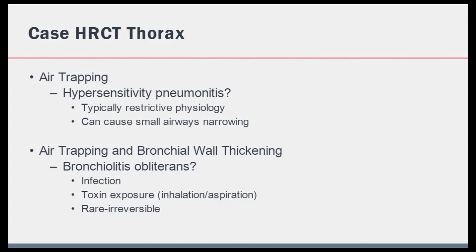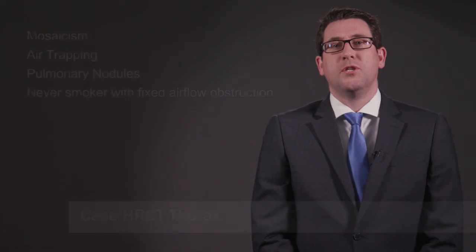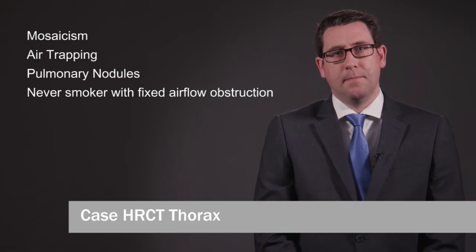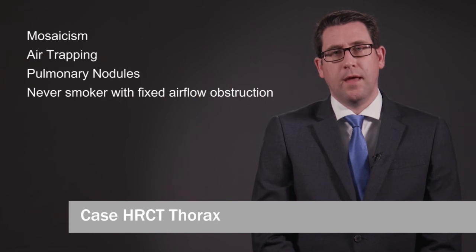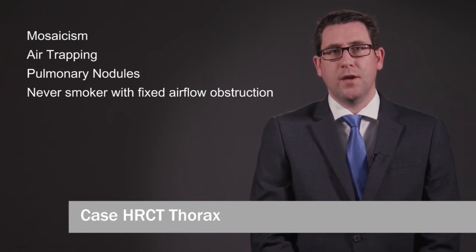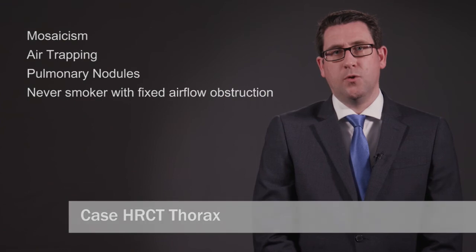Returning to our case, on closer inspection there was evidence of numerous pulmonary nodules on her CT thorax, some of which are highlighted here by the arrows shown. To summarize the CT findings: there was mosaic perfusion with air trapping, and numerous subcentimetre nodules were also present. All of these findings were in a non-smoker with fixed airflow obstruction. Together, these findings point towards a diagnosis of diffuse idiopathic pulmonary neuroendocrine cell hyperplasia, or DIPNECH for short, which is what this patient was diagnosed with.